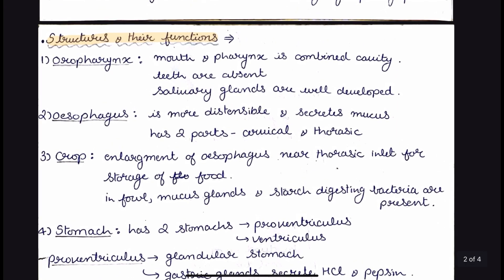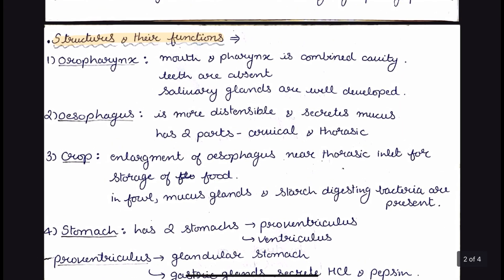First, we have the oropharynx. In case of birds, the mouth and pharynx form a combined cavity because of the absence of the soft palate. So the point to remember is that it is called oropharynx. The soft palate is absent in birds. Teeth are also absent. The beak is present, and the tongue is triangular in shape with mechanical papillae. Salivary glands are well developed.